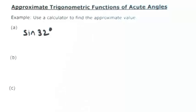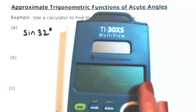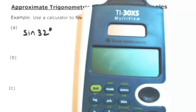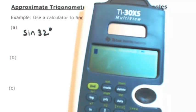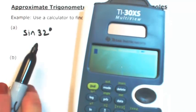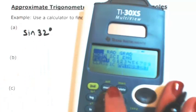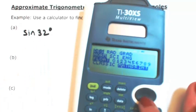Scientific or graphing, either one. So let me pull out my scientific calculator here. First thing you always need to do is make sure your mode is correct. Since this is 32 degrees, I'm going to make sure that my mode is in degrees.